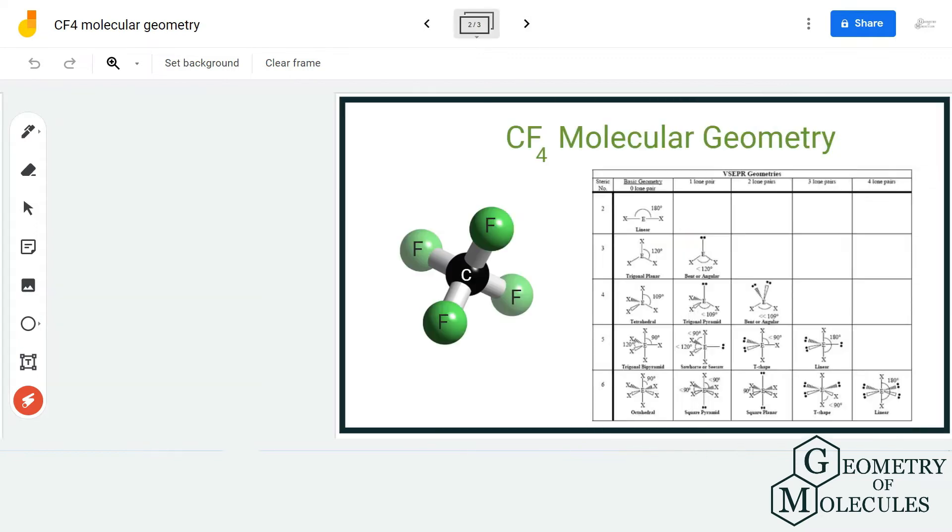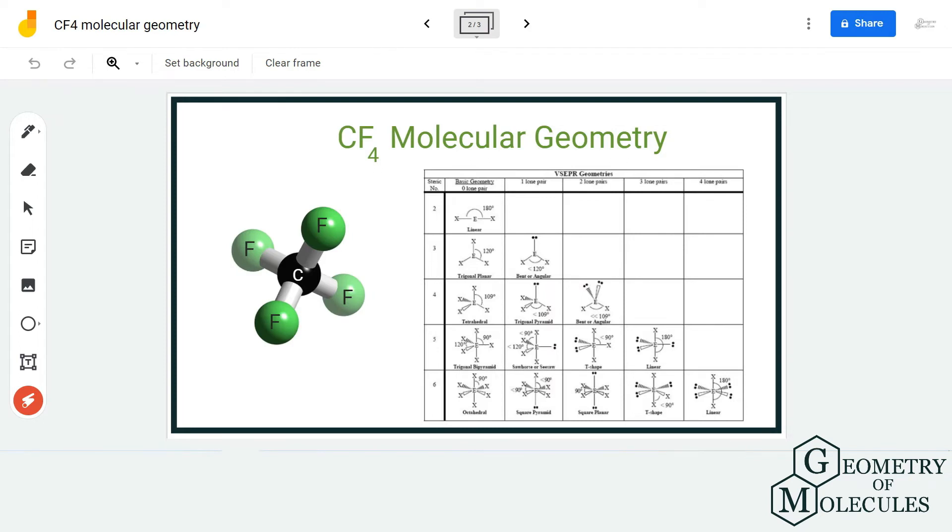We can use either the method of steric number to find out the molecular geometry, or we can also use the AXN notation. We can also view this molecule in the 3D shape to find out its molecular geometry.